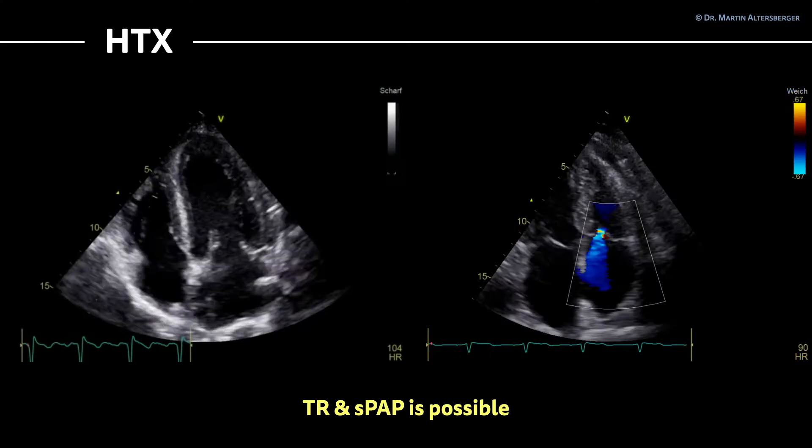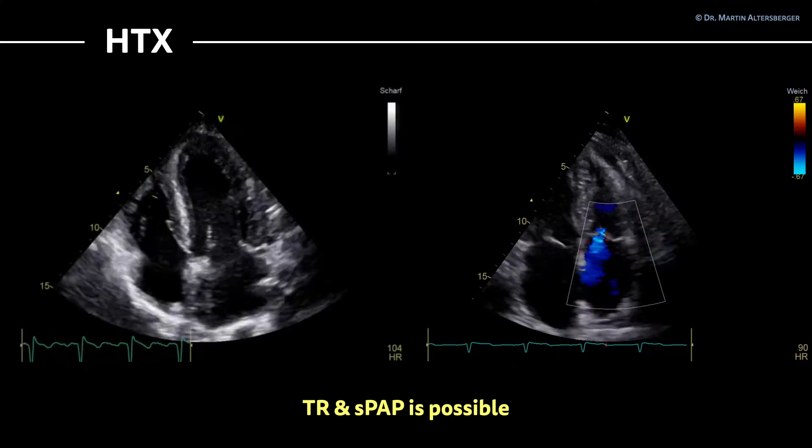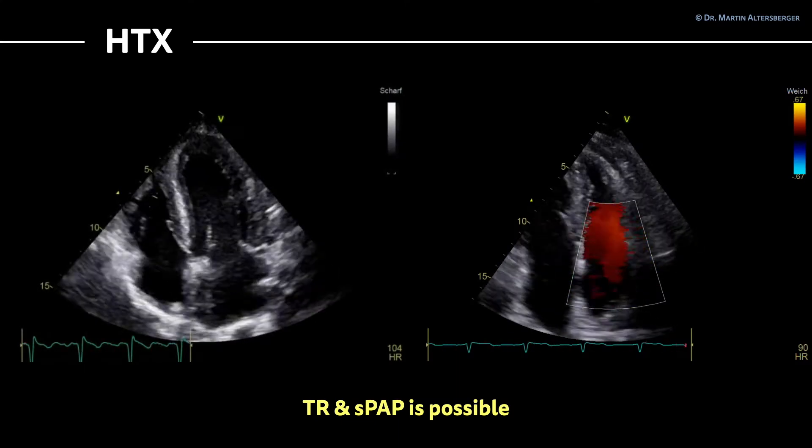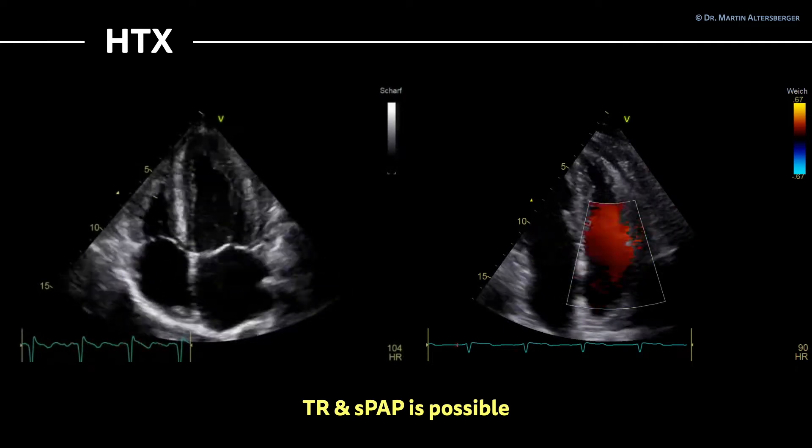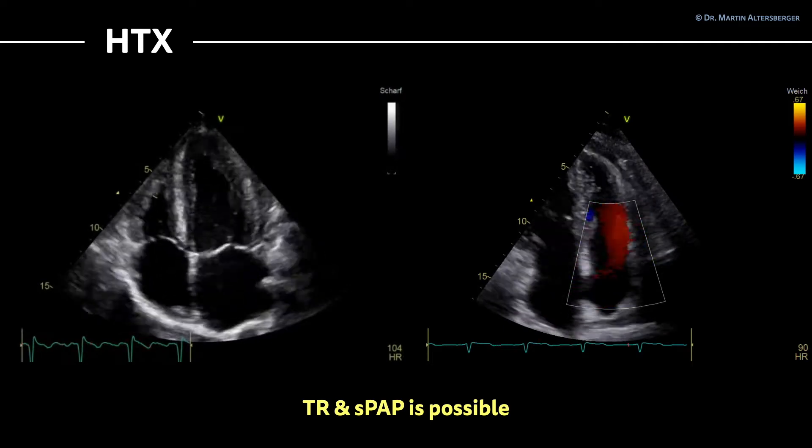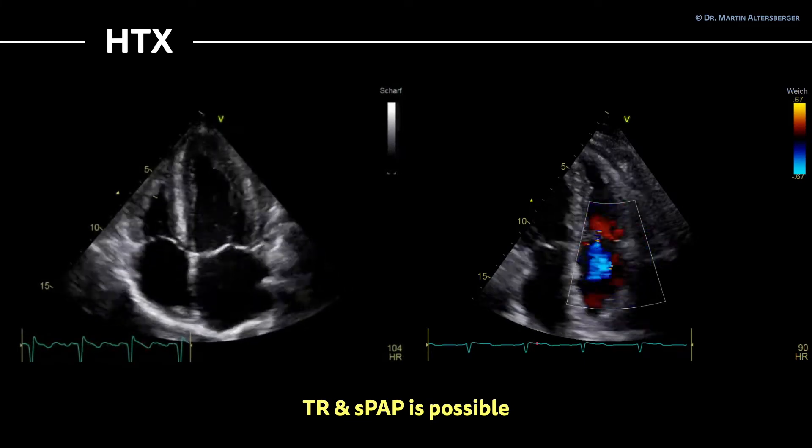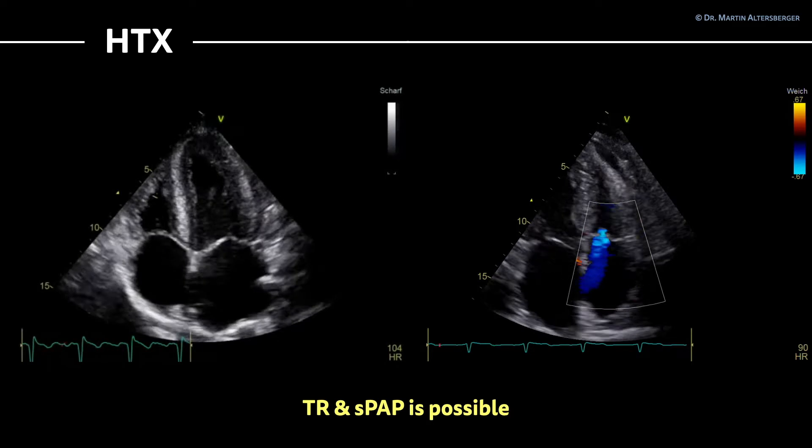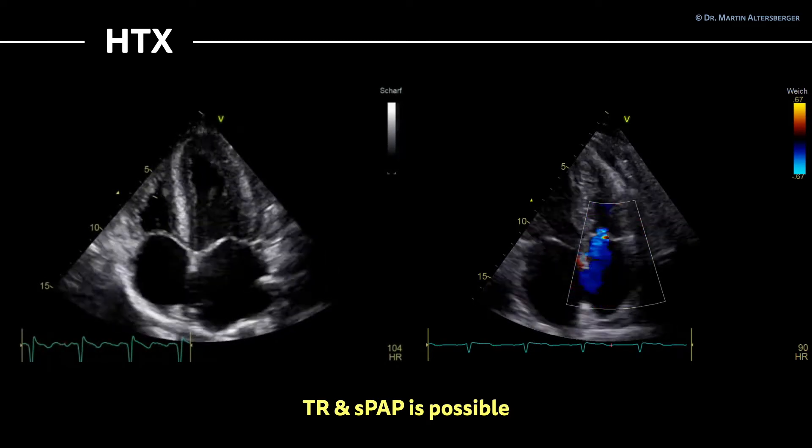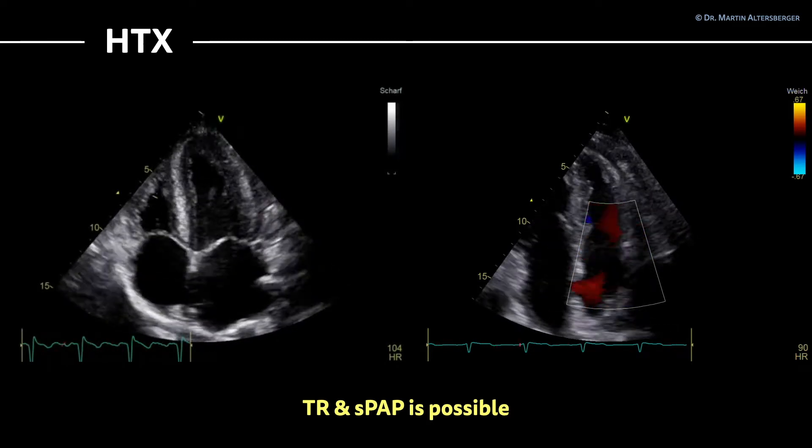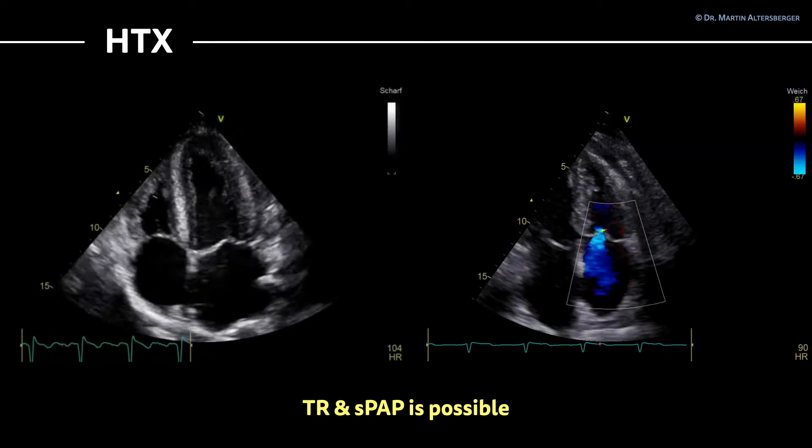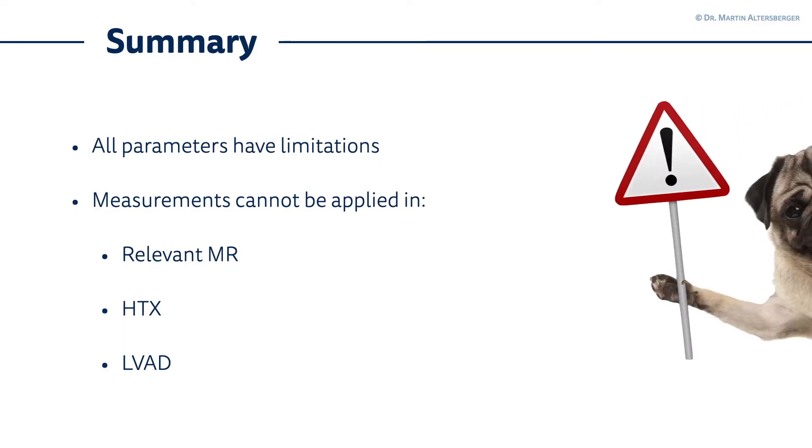But there's one measurement you can actually do, and that's the tricuspid regurgitation and the systolic pulmonary arterial pressure. If you have a proper TR signal, as seen in the right side - the image is a bit turned around, it's an atypical apical view of the right ventricle and you see TR. When you have that, you can measure TR and the peak velocity and therefore calculate systolic pulmonary arterial pressures.